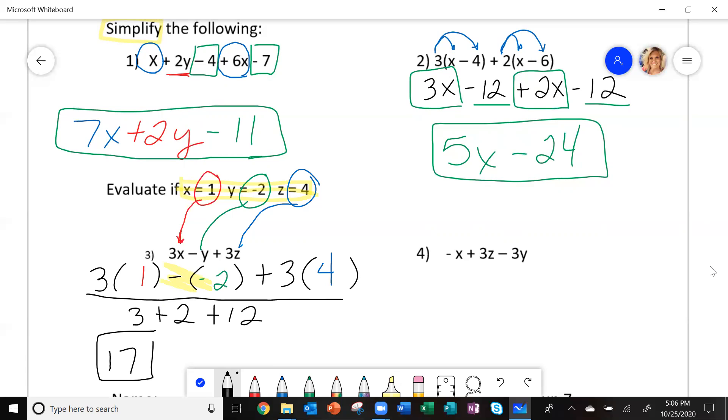Try and do number 4 the same way I just did number 3. So on number 4, I'm going to go through, I'm going to put a negative. And then where the x is, I'm going to put a parentheses plus 3. And where the z is, put a parentheses minus 3. And where the y is, put a parentheses. So where x was 1, I'm going to put the 1 in there.